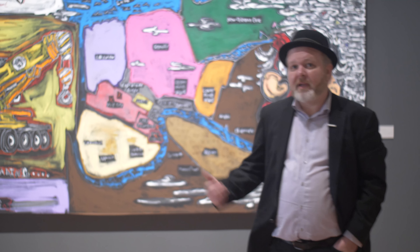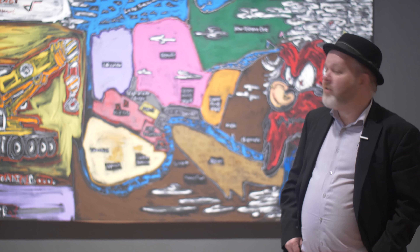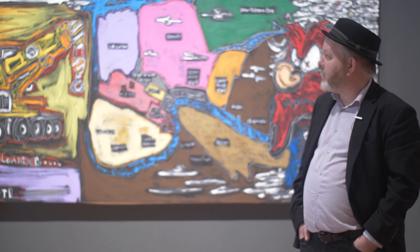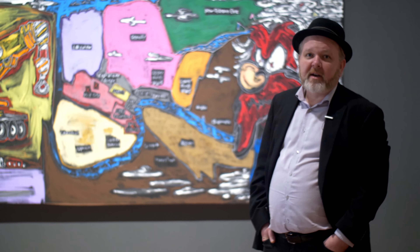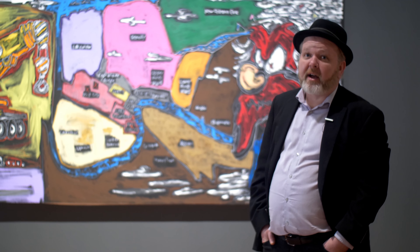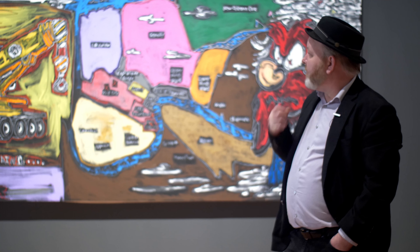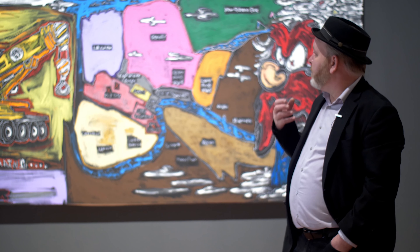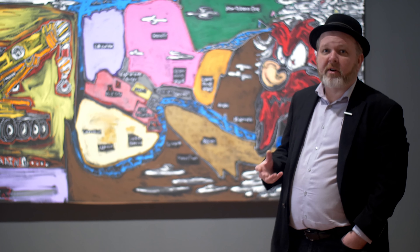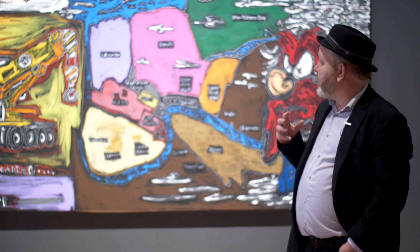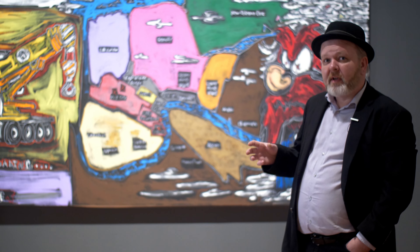This painting behind me is 'The Undiscovered History of New Orleans,' 2019, and it epitomizes John Isaiah's current style. It's a very vibrant, brightly colored work with a deep narrative.